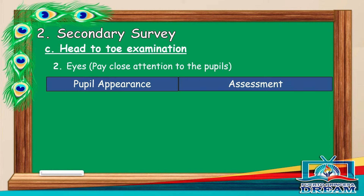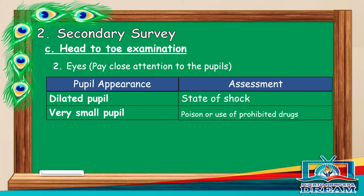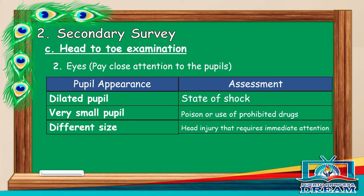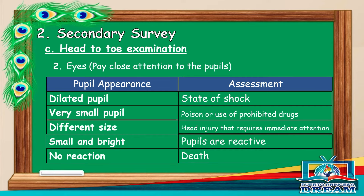Eyes. The table shows pupil appearance and assessment. Dilated pupil: state of shock. Very small pupils: poison or use of prohibited drugs. Different size: head injury that requires immediate attention. Small and bright: pupils are reactive. No reaction: death.